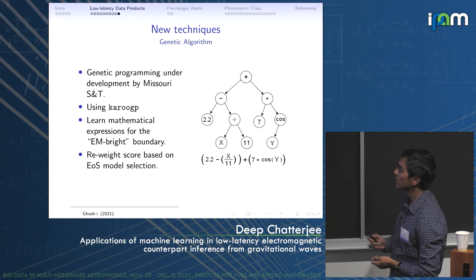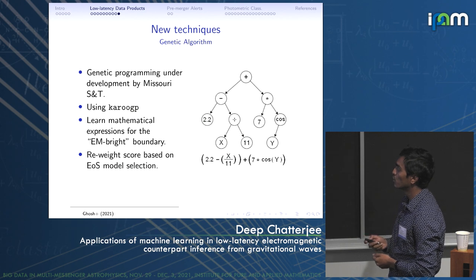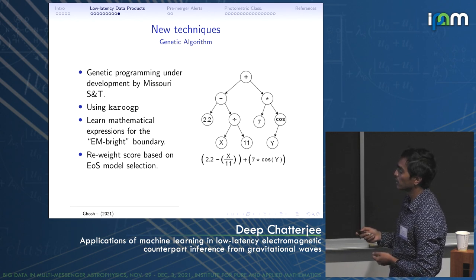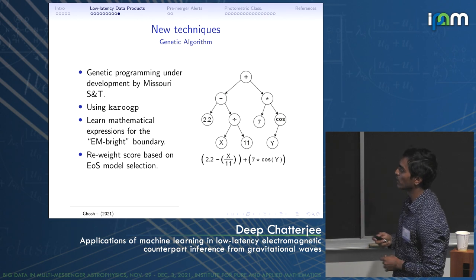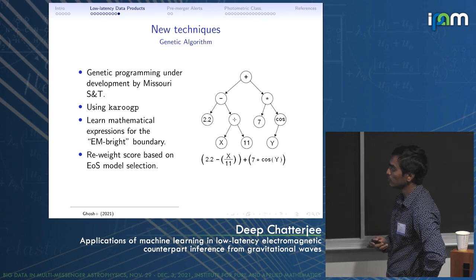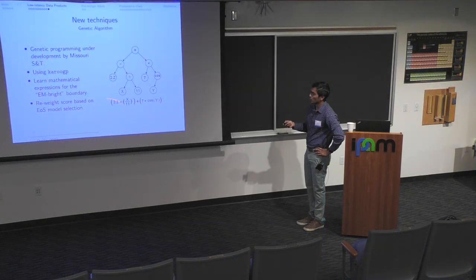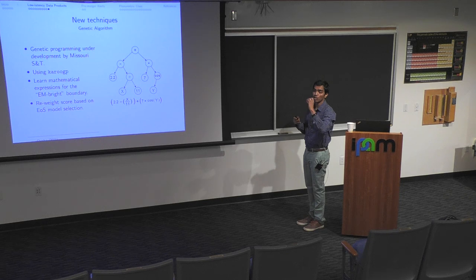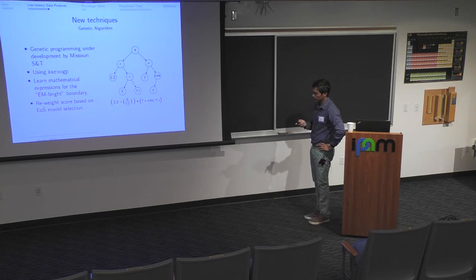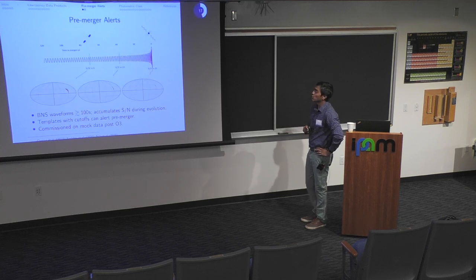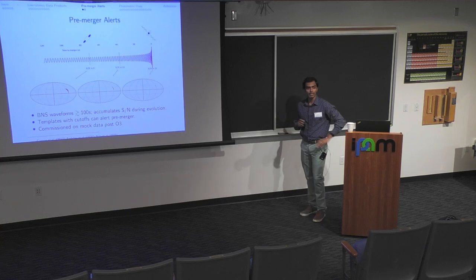There is work underway by the Missouri S&T group to develop newer algorithms to solve this problem. One approach, pursued by student Sushant Sharma, uses genetic programming to find a mathematical boundary in the observed plane to act as a dividing line. There is also work being done to reweight this score by marginalizing over the equation of state rather than considering a single equation of state.